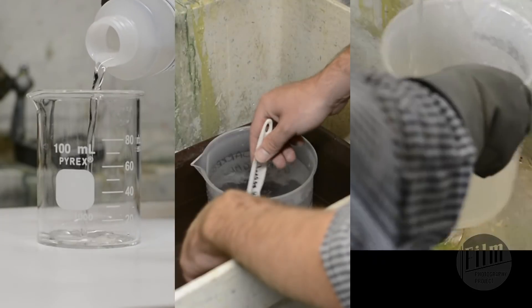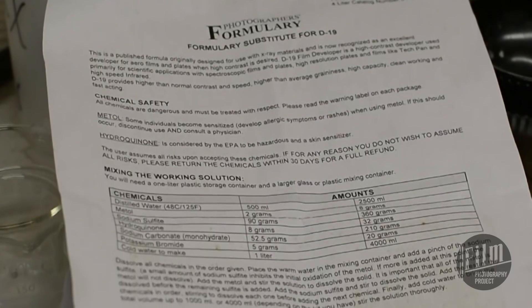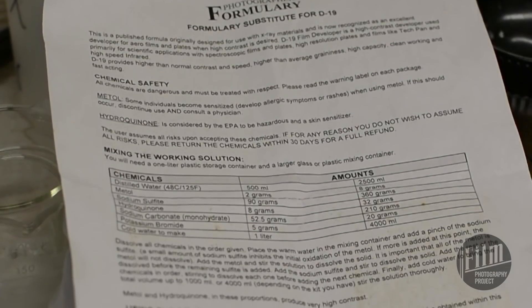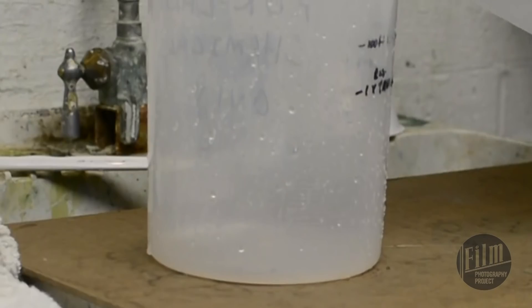Now we're ready to mix our chemicals. I'm going to skip the fixer because there are plenty of videos online on how to do that. For the developer, just follow the instructions on the box. The D19 comes in packets like these.